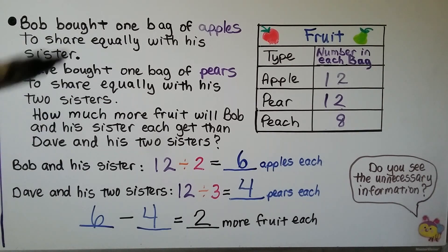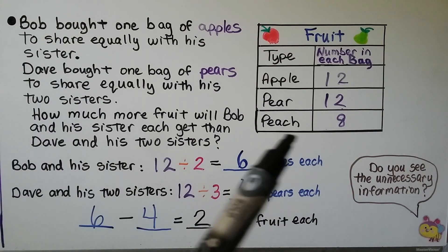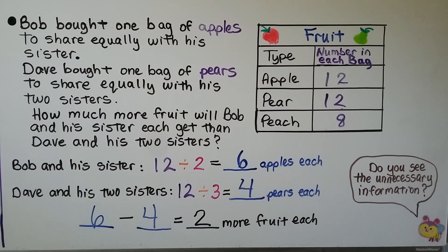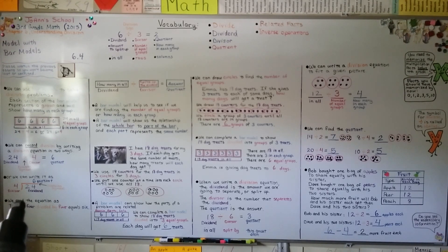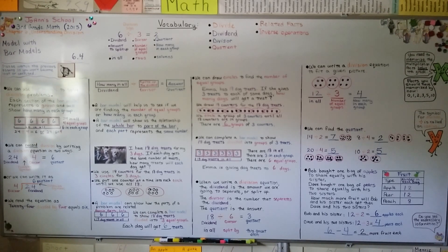Looking at this table, do you see the unnecessary information? The peaches were never mentioned in the word problem - that information was just there in the table; we didn't need it. We can use bar models or counters and make equal groups to solve division problems. A division problem can be written as a number sentence, or with a curved line and bar as the division sign. The dividend is the number in all, the divisor splits up the dividend, and the answer is called the quotient. I hope you're doing well, and I'll see you next lesson!